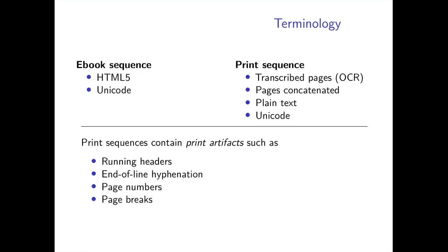I'll begin with some definitions and then describe the data, methods, and results. First, I need to clarify what I mean by an e-book version and by a print version. By e-book version, I mean an HTML5 document. EPUB version 3, the dominant standard for e-books today, is just HTML5 serialized using XML. Converting EPUB into HTML5 is easy, provided there's no encryption.